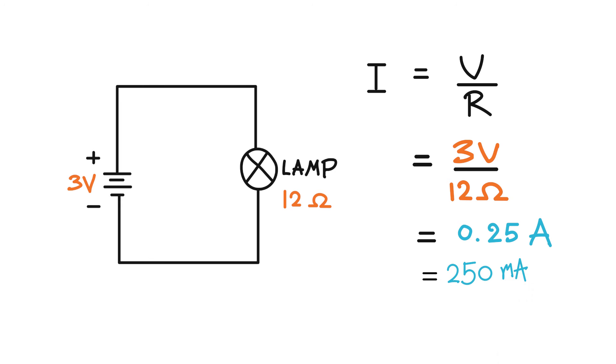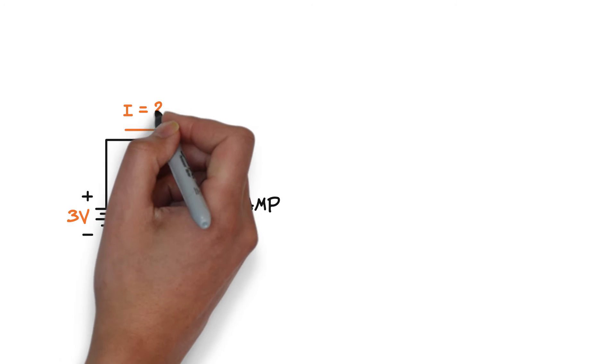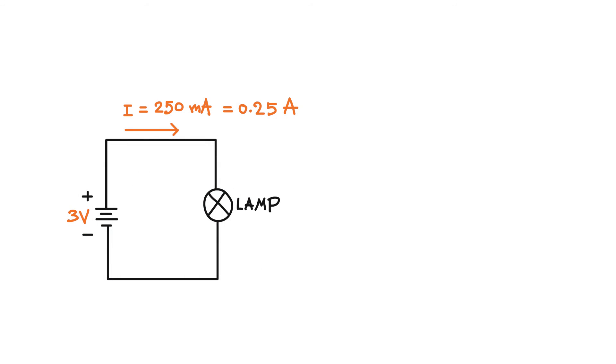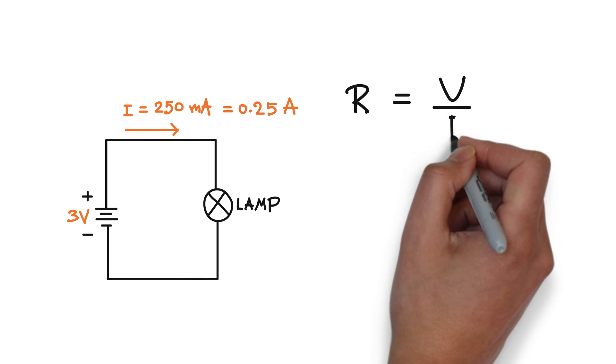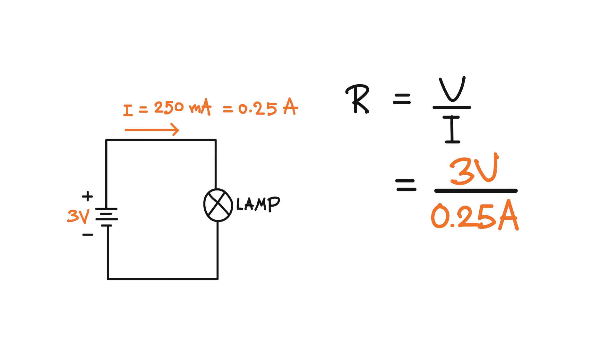Or if you know the battery voltage, which is 3 volts, and the current, which is 250 milliamps or 0.25 amp, you can calculate the resistance of the lamp as R equal to V over I, or 3 volts divided by 0.25 amp, equal to 12 ohms.